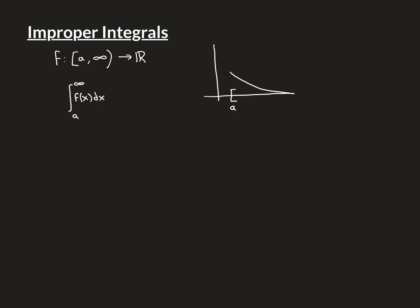The first type is integrating to infinity. Consider a function f defined on a region from the point a all the way up to infinity — unbounded in the rightward direction, a real-valued function. In a picture of such a function, a is our starting point, the domain goes on forever, and the function gets smaller and smaller, closer and closer to zero. We want to consider defining something like the integral from a to infinity of f(x) dx — is it possible to make sense of this?